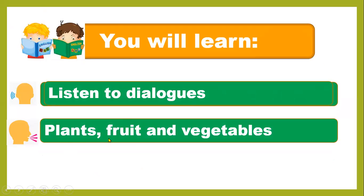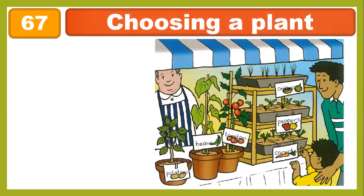We talked about plants, fruits, and vegetables. Here is the conversation between the seller and the buyer. For this, you have to listen to Track 67 — the conversation between the seller and the buyer. Here is the track.